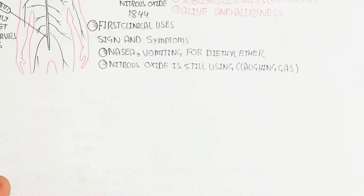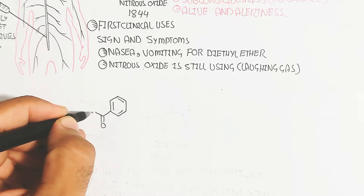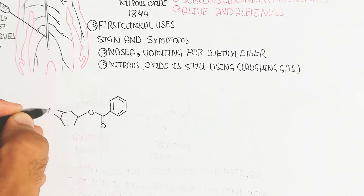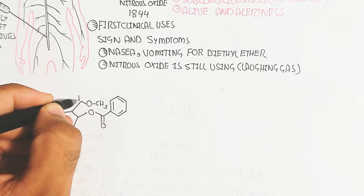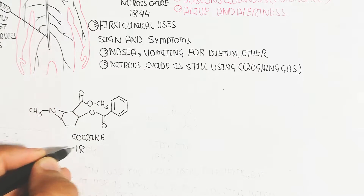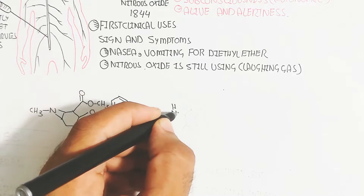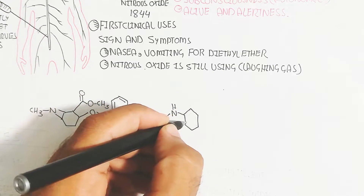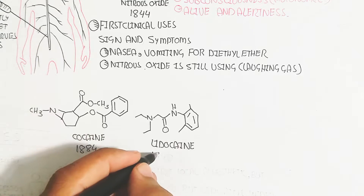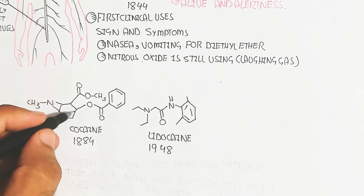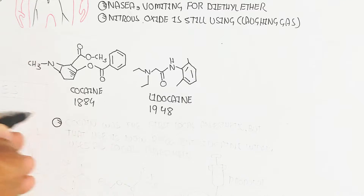Inhalation can basically create anesthetic properties. Cocaine is an organic compound first used in 1884 as a local anesthetic, while lidocaine was introduced in 1948.